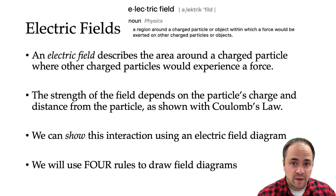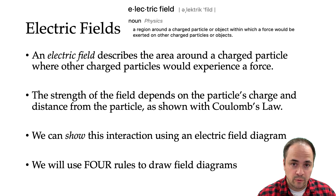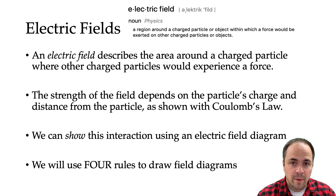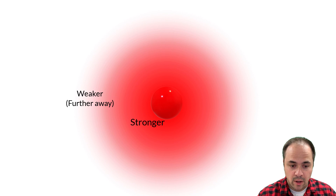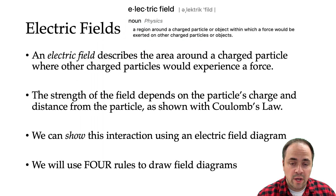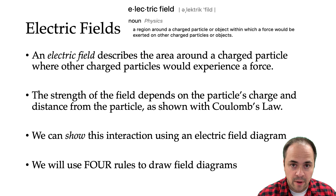Now an electric field describes the area around a charged particle where other charged particles would feel a force. The strength of the field depends on the particle's charge and the distance from the particle as described by Coulomb's Law. And we can show the field of this particle using an electric field diagram.